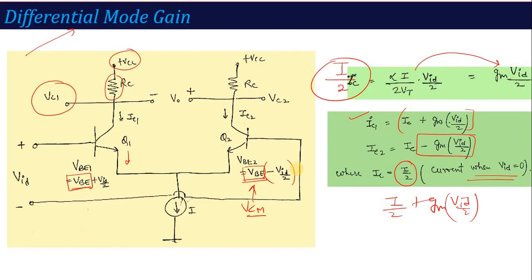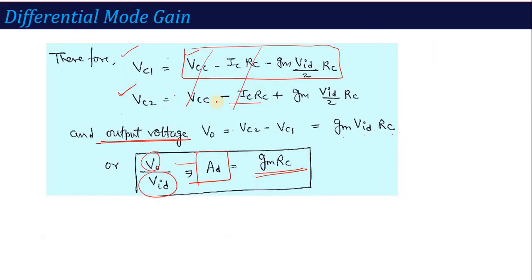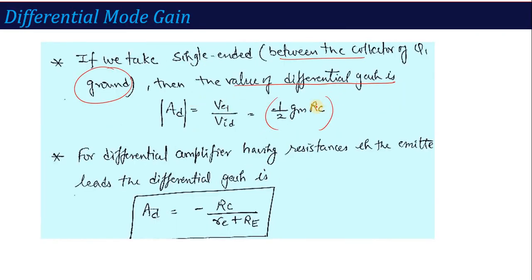Another formula also exists here for differential mode gain. What is it? If you are taking single ended operation, meaning if you are taking output from one particular terminal, the output is taken between the collector of Q1 and the ground. In that case the value of differential gain is given by VC1 divided by VID and this is given by Gm RC by 2. The concept here is that when we consider both output terminals, then differential gain is Gm RC. And if we consider single output terminal, then total gain is Gm RC by 2. Similarly, if in the differential amplifier you have resistances in the emitter leads also, then in that case the differential amplifier gain is given as AD is equal to minus RC divided by RE plus RE. This is a direct formula.